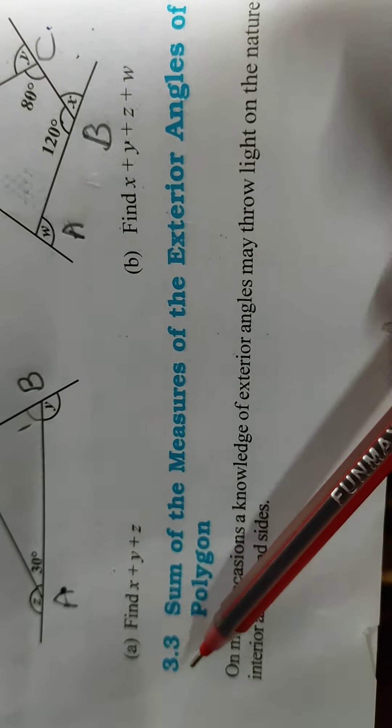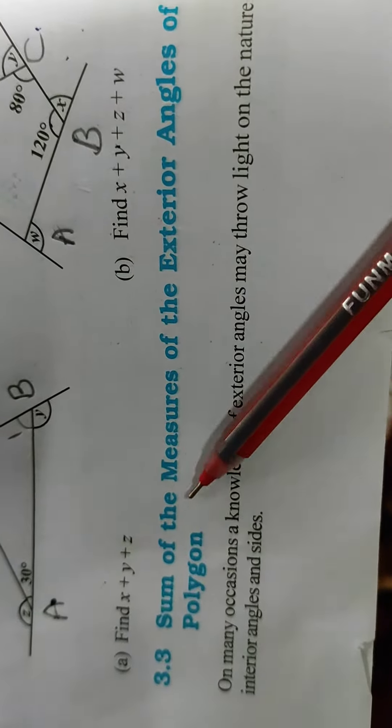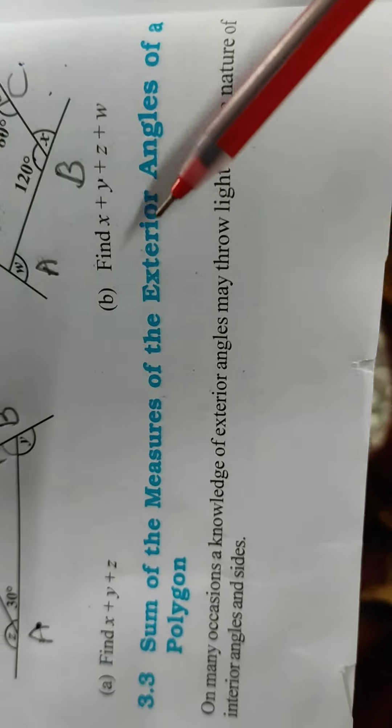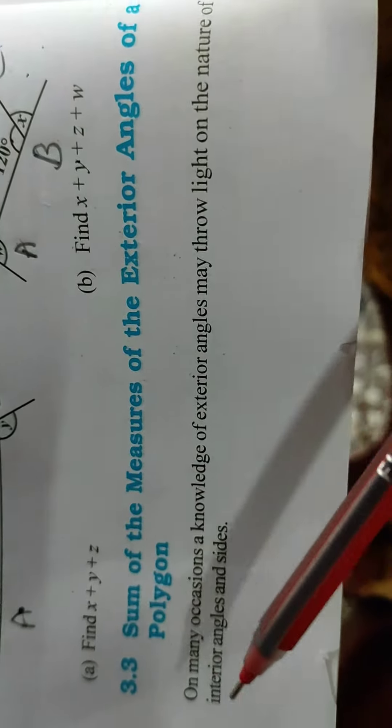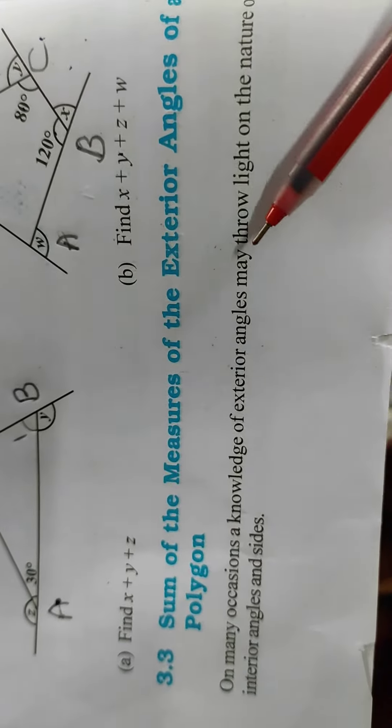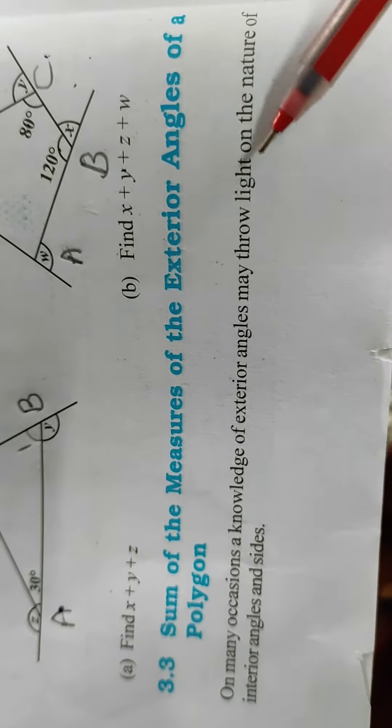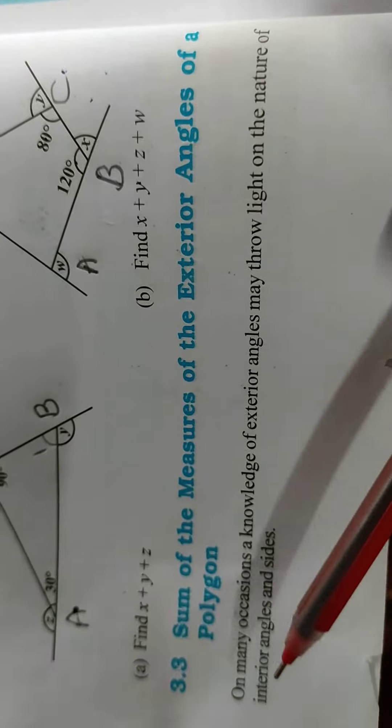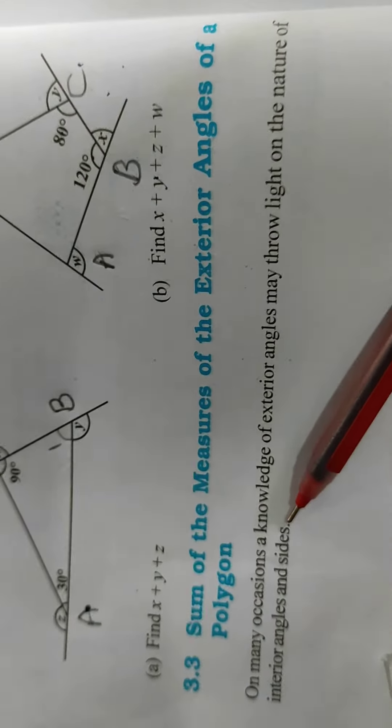Let us start from 3.3. Some of the measures of the exterior angles of a polygon. On many occasions a knowledge of exterior angles may throw light on the nature of interior angles and sides.